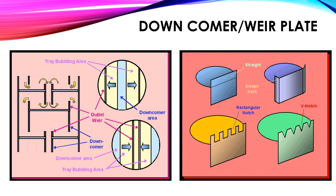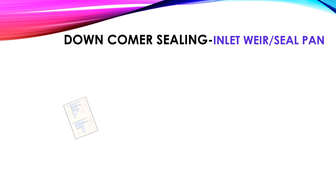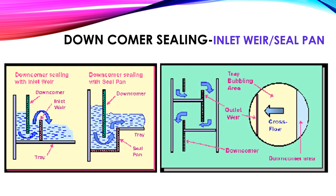This figure shows different types of downcomer and weir plates. The second figure shows straight type, rectangular notch type, and V-notch type weir plates. Different types of downcomer sealing methods are also shown; the first figure is the inlet weir and seal pan type.